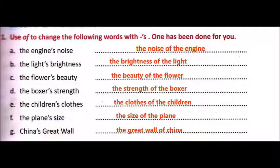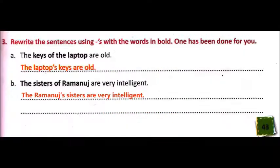Now in this second exercise, a sentence is given to you and you have to use the first form — that is, apostrophe S. We learned two ways: one by adding apostrophe S and one by adding 'of'. The previous exercise used 'of'; now we will write these sentences by adding apostrophe S. For example: 'The keys of the laptop are old' — written with apostrophe S becomes 'the laptop's keys are old'.